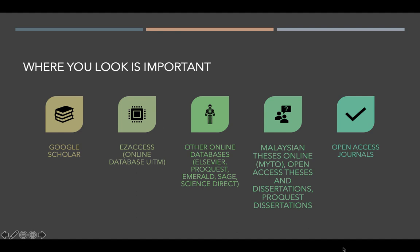You can also find other online databases such as Elsevier, ScienceDirect, ProQuest, Emerald, EBSCO, and SAGE. There's also the Malaysian Thesis Online, also known as MAITO, the Open Access Thesis and Dissertation (OATD), ProQuest Dissertations, and Open Access Journals. I believe I have shown you in our previous classes how to find this literature.